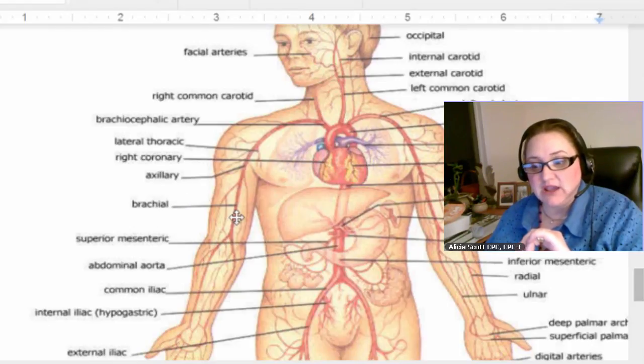Let's see, brachial, right here in the arm, that's the brachial artery. On little babies when you want to check their pulse, you don't check it in the lower arm, you take the brachial pulse.